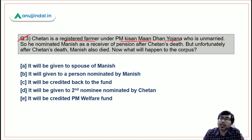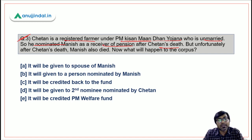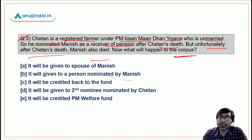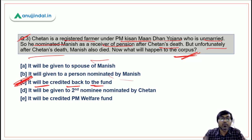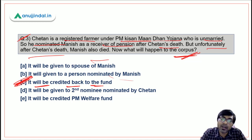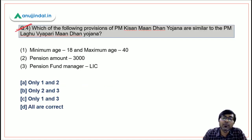Question 3: Chetan is a registered farmer under PM Kisan Mandhan Yojana who is unmarried. He nominated Manish as receiver of pension after his death. Chetan died, and then Manish also died. What will happen to the corpus? The corpus will be credited back to the fund. Option C is correct — if both the subscriber and the nominee die, the corpus goes back to the fund.